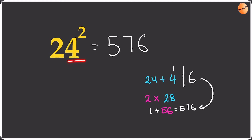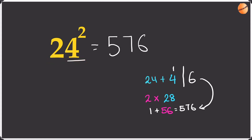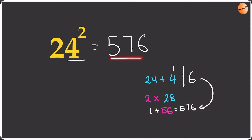Let me explain 24 squared once more. We squared the units: 4 squared was 16, so we wrote the 6 and took the 1 as a remainder. We found the difference from 20 — 24 minus 20 is 4. We added that to 24 to get 28, kept the remainder aside, then multiplied by the tens place: 2 times 28 is 56, plus the remainder 1 gives 57, and bringing the 6 over gives 576.